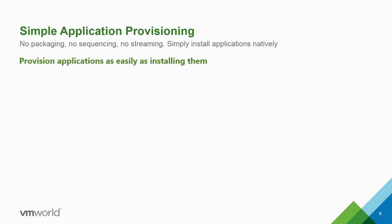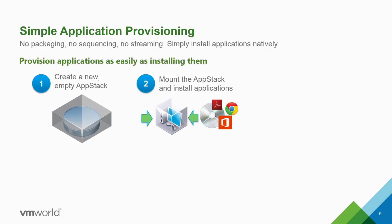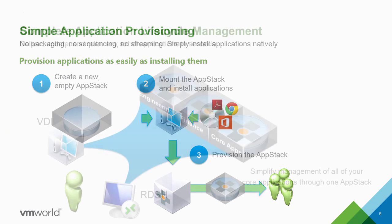Application provisioning doesn't require sequencing, packaging, or streaming — it's as simple as installing the applications. We create a new empty App Stack from templates, which are empty VMDKs with the right metadata. We attach that to a provisioning machine — a very clean VM with minimal software installed and patched up to date. We put it in provisioning mode, which enables read-write, install the applications, reboot as many times as needed, and then those applications are ready to be provisioned to users.